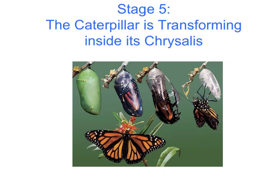Stage 5. Once inside its chrysalis, the caterpillar begins transforming into a butterfly. This picture shows the changes that happen to the chrysalis during this stage. You will notice that the chrysalis starts off green and slowly becomes clear. Watch the butterfly hatch from its chrysalis — the butterfly must wait for its wings to dry before it can fly.